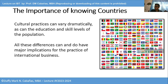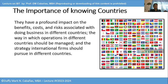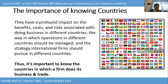For example, I have a colleague in the office, a consultant from Singapore but a Chinese national. According to her, Facebook is banned in China, so they used WeChat and WhatsApp as their means of communication. These differences have a profound impact on the benefits, costs, and risks associated with doing business in different countries, the way in which operations in different countries should be managed, and the strategy international firms should pursue. Thus, it's important to know the countries in which a firm does its business and trade.